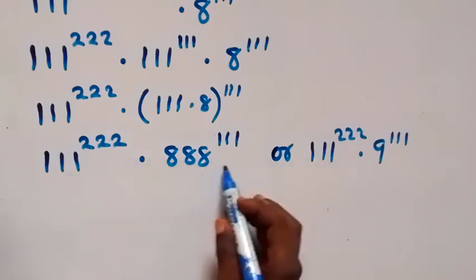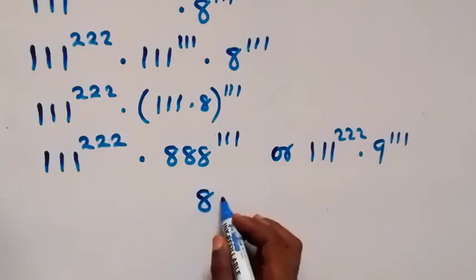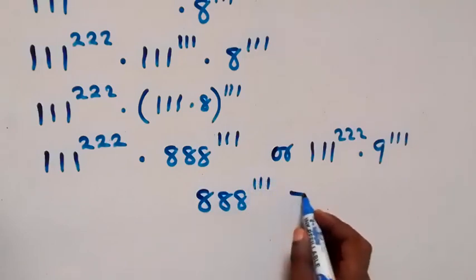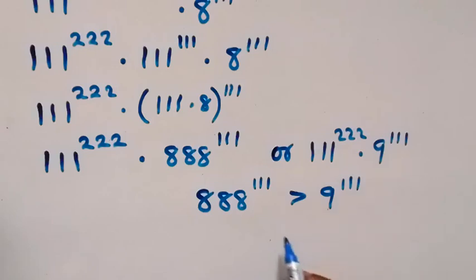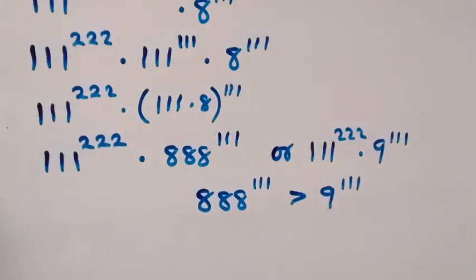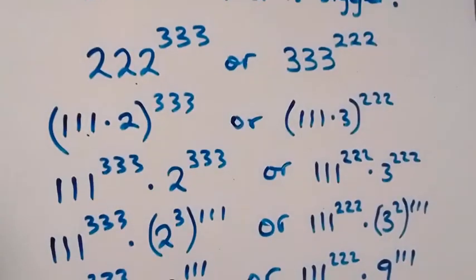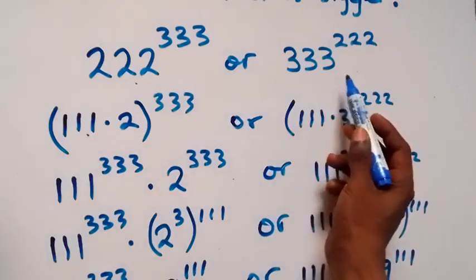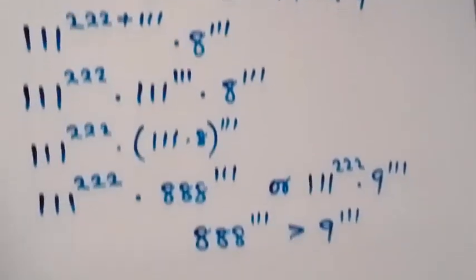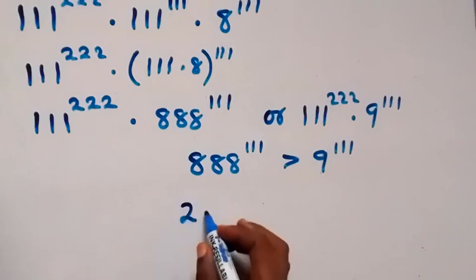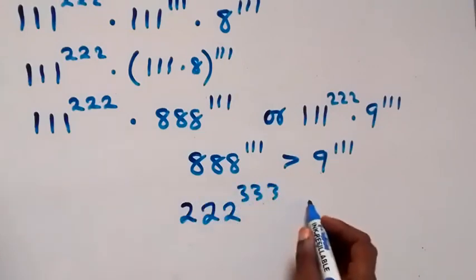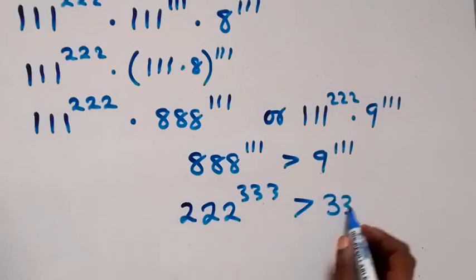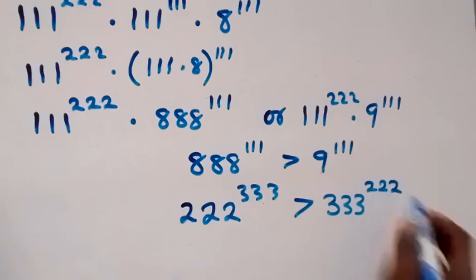When we compare this with what we have on the other side, which is 111 raised to power 222 times 9 raised to power 111, it is clear that 888 raised to power 111 will be greater than 9 raised to power 111, because they have the same power and 888 is far greater than 9. Therefore we can conclude that 222 raised to power 333 is greater than 333 raised to power 222.